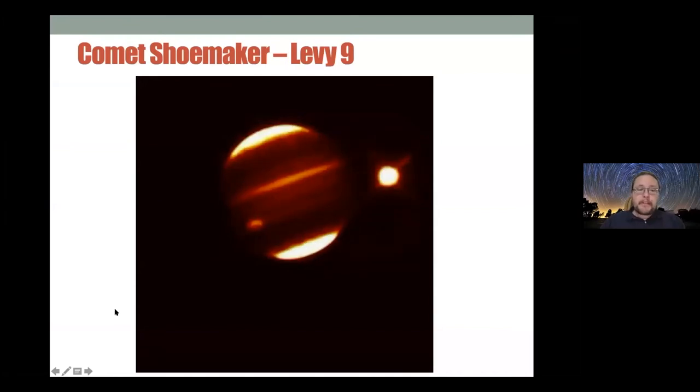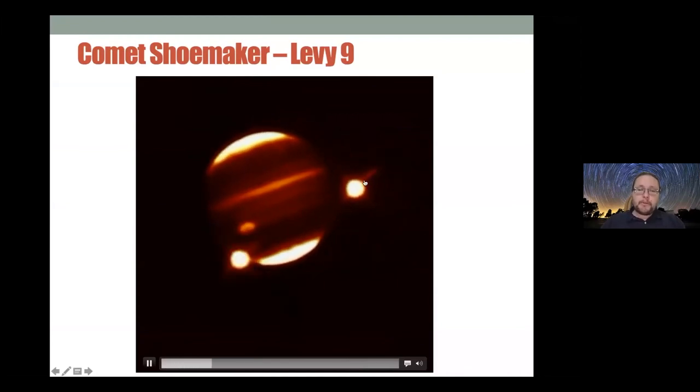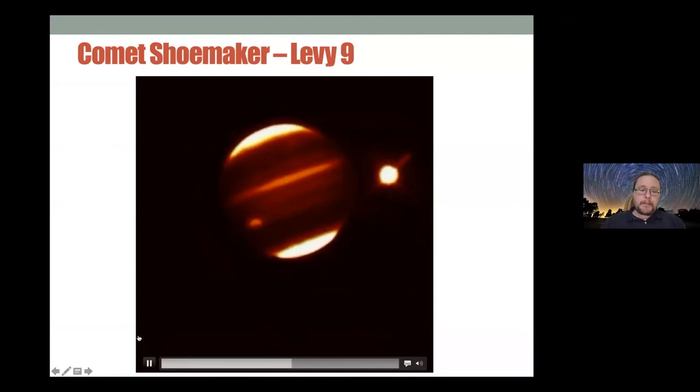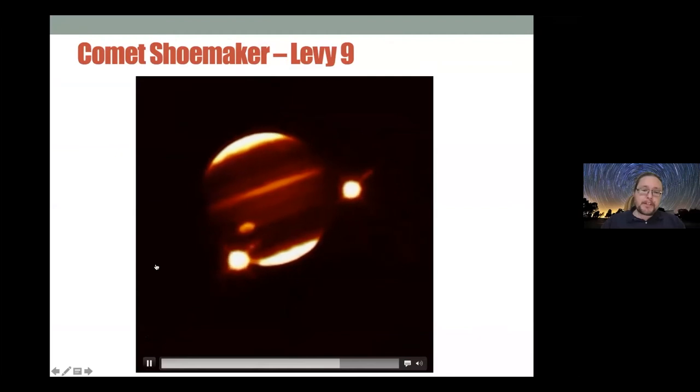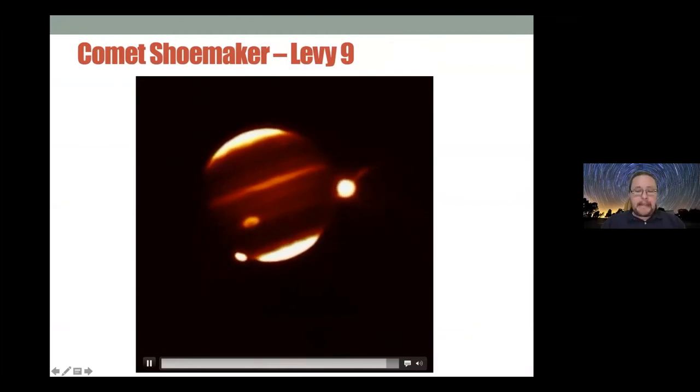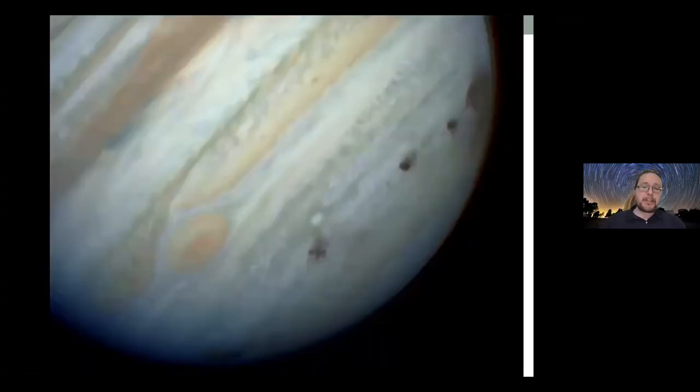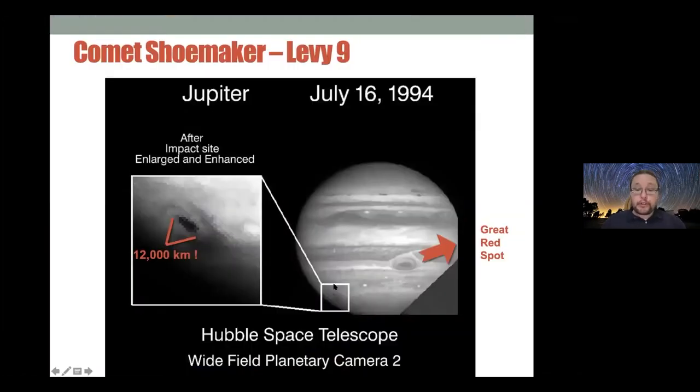This video was taken at Siding Spring Observatory. You can see here Jupiter, the great red spot, and one of the moons of Jupiter, Europa. If we replay this, you can see this big flash on the side. That's not a star, that's not a planet, that's not a moon coming around. That is an explosion from pieces of this comet smashing into Jupiter. The Hubble Space Telescope took a bunch of images afterward and you can see the debris field, these holes, these craters in Jupiter.